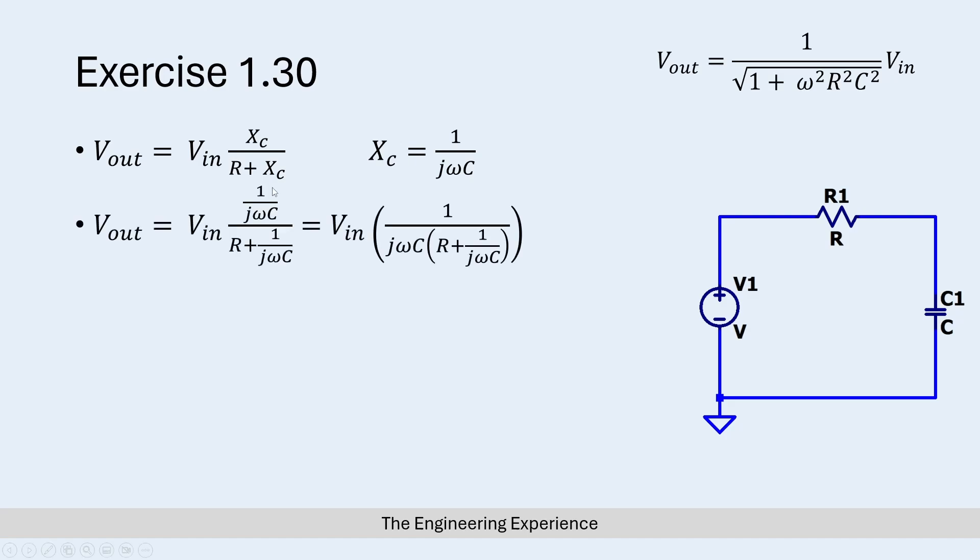We are replacing X_C with 1 over jωC. We get this equation over here, which is V_out equals V_in multiplied by 1 over jωC divided by R plus 1 over jωC.